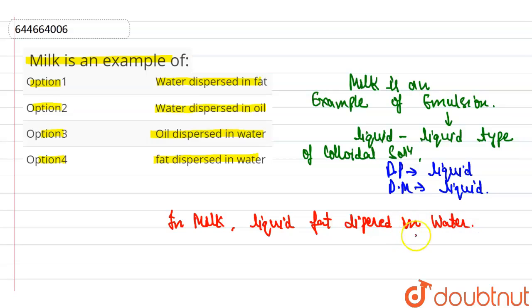Here dispersed medium and dispersed phase both are liquid. But in case of milk, we use dispersed phase as a fat and dispersed medium as a water.